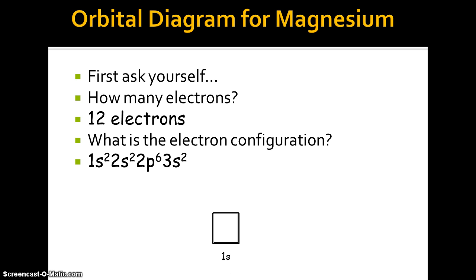So we need to draw our different sublevels. So our 1s, 2s, and see we have our 1s. We're going to have our 2s. We'll have our 2p. And we'll have our 3s. So there's our 2p and here's our 3s.